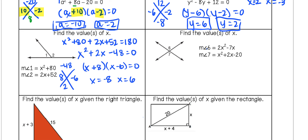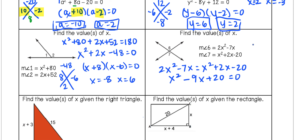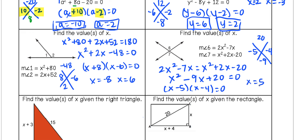Now we have vertical angles, so they're congruent — we set the two expressions equal to each other. Combining like terms and setting equal to zero, we get x squared minus 9x plus 20 equals zero. To factor, we're looking for factors of 20 that add to negative 9: that's negative 5 and negative 4. Our binomials are (x minus 5)(x minus 4) equals zero, giving x equals 5 and x equals 4. Checking x equals 5: 2(25) minus 35 gives 15, and 25 plus 10 minus 20 also gives 15. Correct!